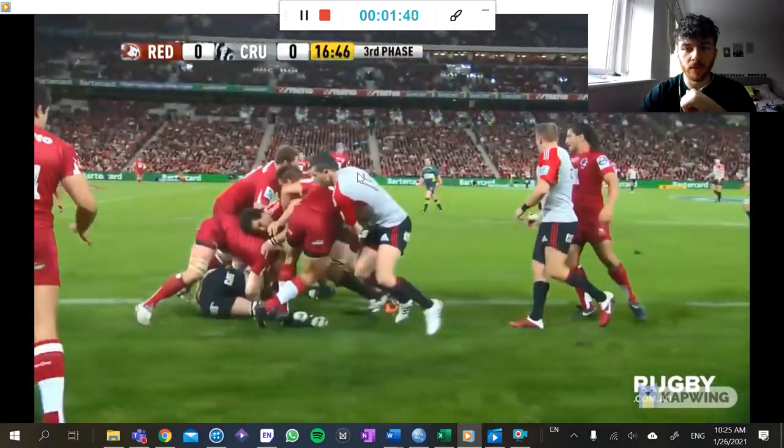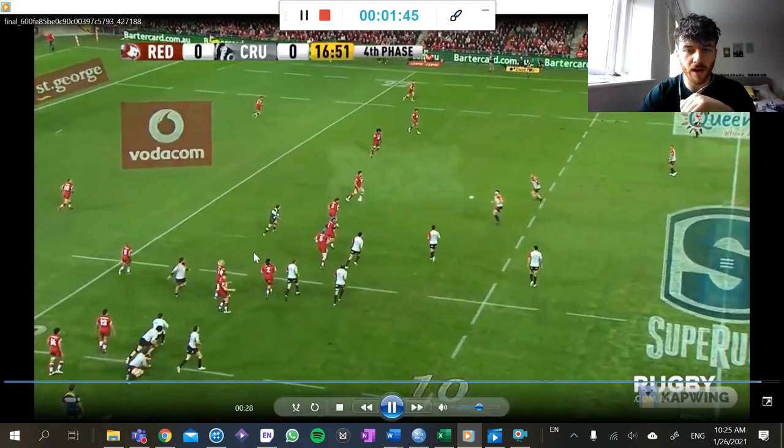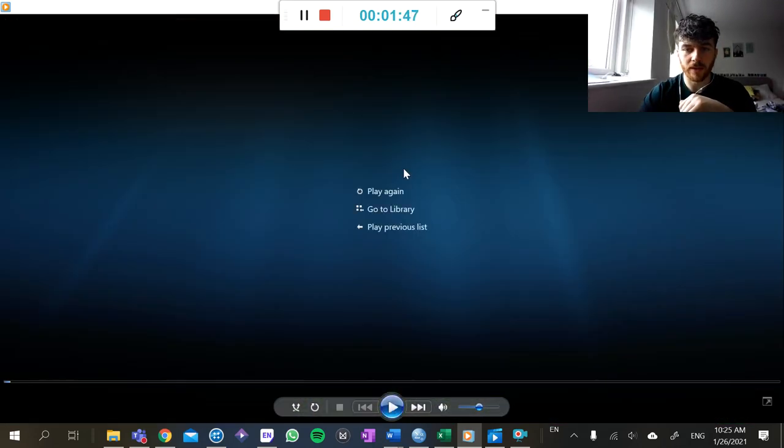They get to the width. This is one of the key parts of these systems, getting to the width. And again, you can see that forward ran, held them, and then they can attack.